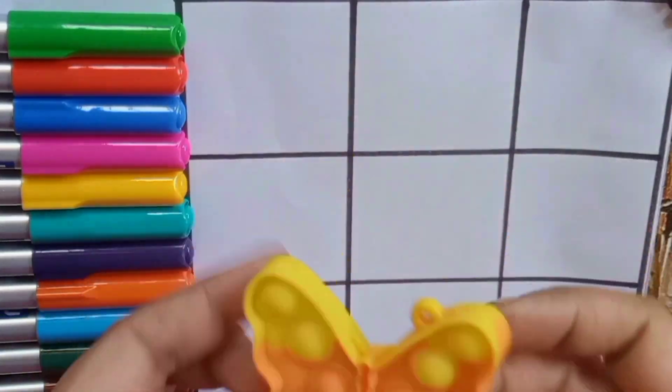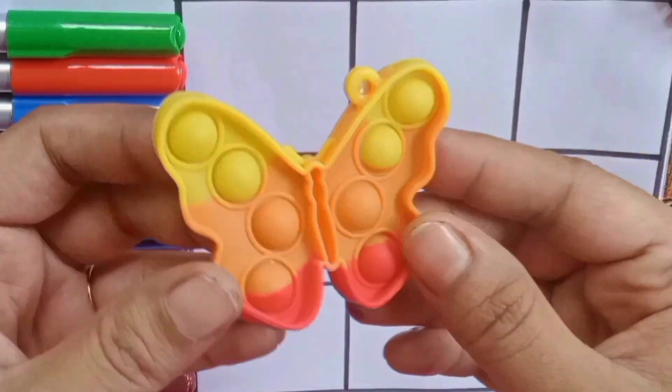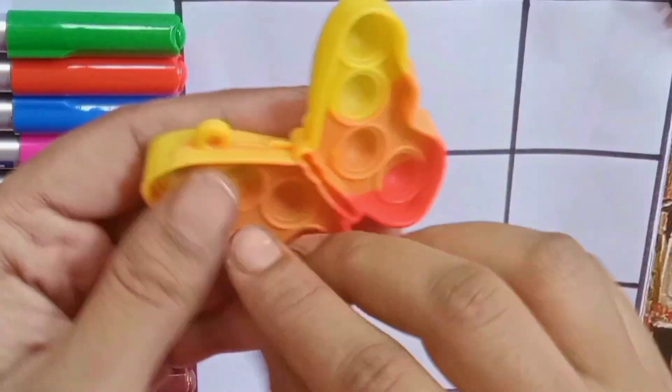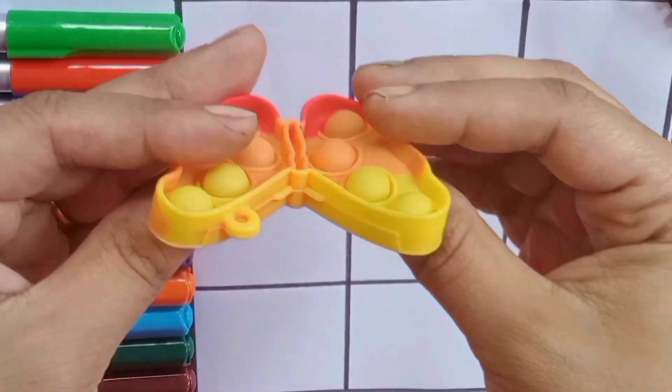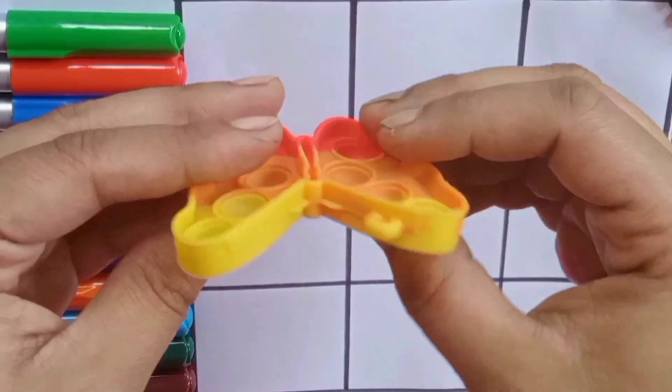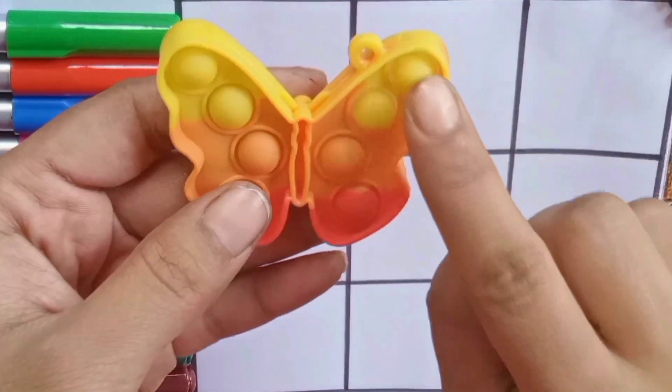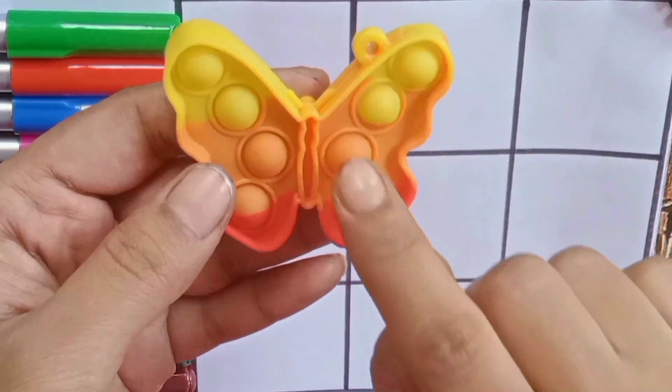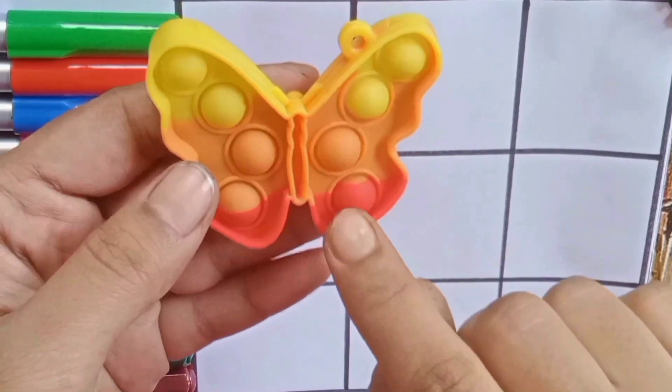Hi kids! Oh wow, a butterfly. This is so colorful. It is a puppet also. We can also play with it. Yellow color, orange color, red color. Let's play.